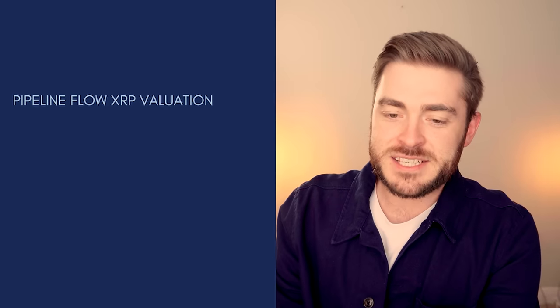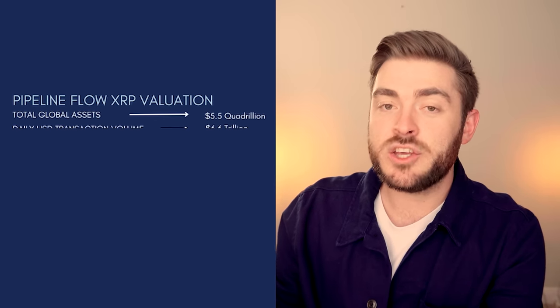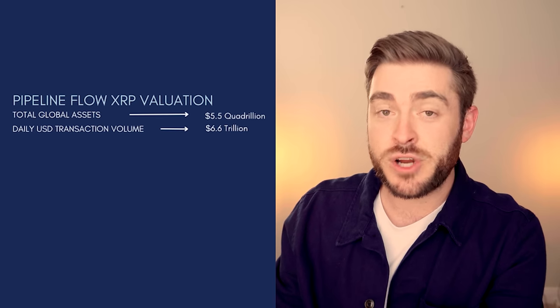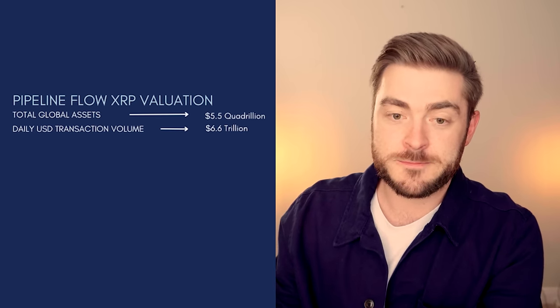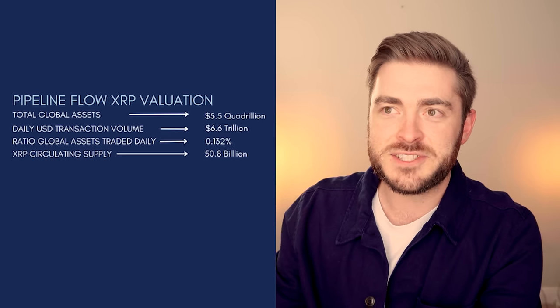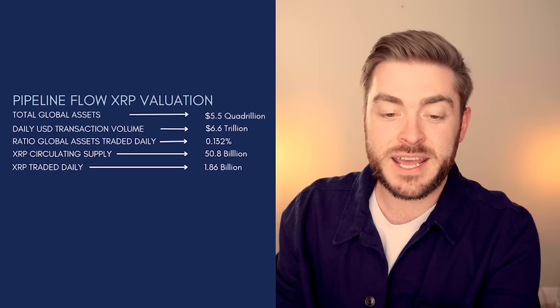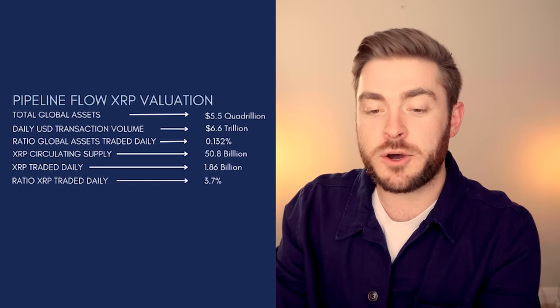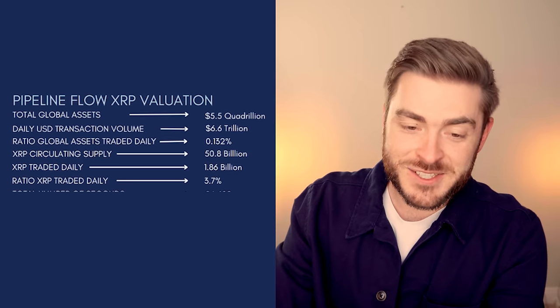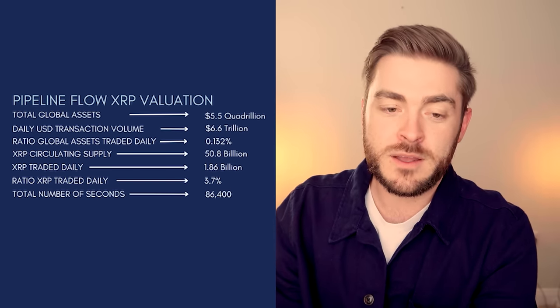Should we get into all of the numbers that create this price prediction for XRP using the Bakke's Pipeline Model? The model uses the following data: total global assets valued at 5.5 quadrillion; daily US dollar transaction volume of 6.6 trillion, which is 0.132% of total global assets; XRP circulating supply of 50.8 billion tokens; 1.86 billion XRP traded every day, making the total ratio of XRP traded daily 3.7%; and the total number of seconds within a day is 86,400. With all of these parameters, the pipeline flow model predicts a price per XRP of $3,541 under these very specific market conditions.